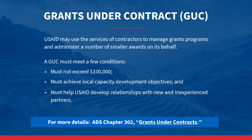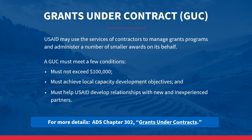With grants under contract, USAID remains significantly involved in establishing selection criteria and must approve grant under contract recipients. GUCs can be a great gateway to USAID funding for new, inexperienced, and underutilized partners. Contractor grant programs may provide technical assistance, training, and other benefits to help sub-awardees develop their capacity. USAID must also retain the ability to terminate all grant activities in extraordinary circumstances. The contractor may advertise potential GUCs through newspapers, professional associations, or websites. For more details, go to ADS Chapter 302, Grants Under Contract.